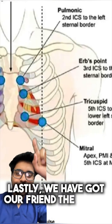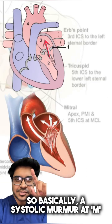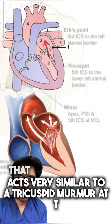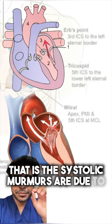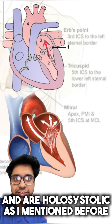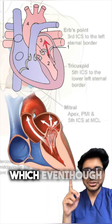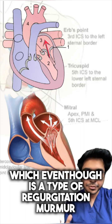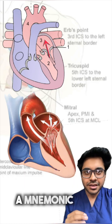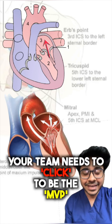Lastly, the mitral area: a systolic murmur at M acts very similar to a tricuspid murmur — systolic murmurs are due to regurgitation at the mitral valve and are holosystolic. Except for mitral valve prolapse, which, even though it is a type of regurgitation murmur, presents with a click due to a floppy valve. A mnemonic you can use: your team needs to click in order to be the MVP — the click reminds you of mitral valve prolapse.